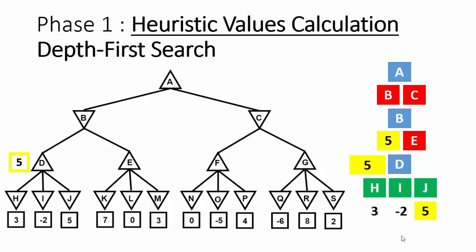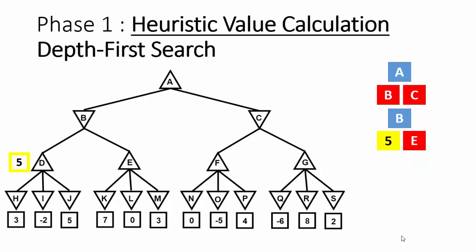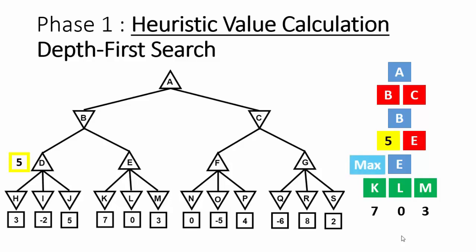After calculating node D's heuristic value, we calculate the heuristic value for the second child of node B, which is node E. Node E's heuristic value is calculated based on its children K, L, and M, with heuristic values 7, 0, and 3. Because node E is a Max player, it selects the maximum heuristic value of its children, which is 7. Node E is replaced by its heuristic value 7, and this final value is placed on the tree.